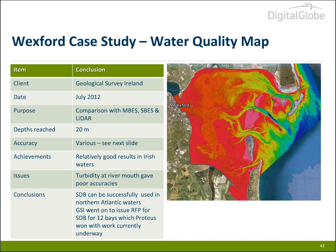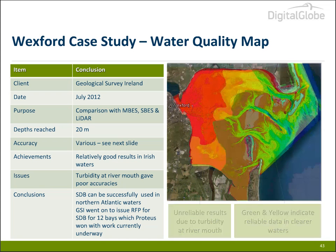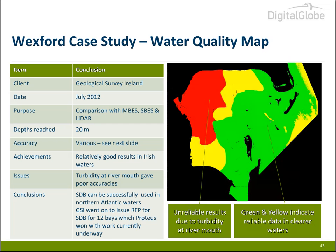Proteus is currently our partner in derivation and selling of the bathymetric product. This is an example which Proteus did over Northern Ireland for Wexford — it shows a water quality map. The area was relatively clear in deeper waters; however, as you get closer inland toward the mouth of the river, the water quality becomes turbid. On the next slide, you will see the degraded performance, which degrades very directly with water clarity.